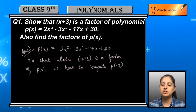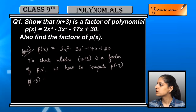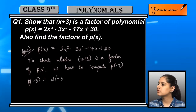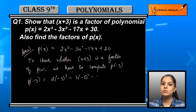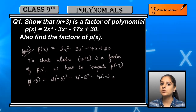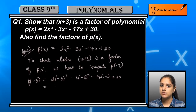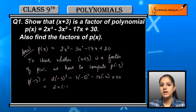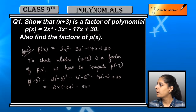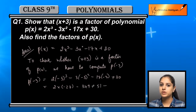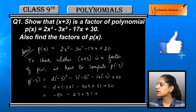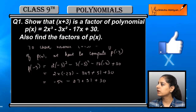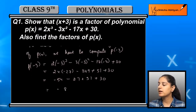So हम check करेंगे that p(minus 3) — मतलब p(x) में x की जगह minus 3 put करने पर — value क्या आएगी। p(minus 3) = 2 into (minus 3)³ minus 3 into (minus 3)² minus 17 into (minus 3) plus 30, which gives us 2 into (minus 27) minus 3 into 9 plus 51 plus 30. Further solving: minus 54 minus 27 plus 51 plus 30.